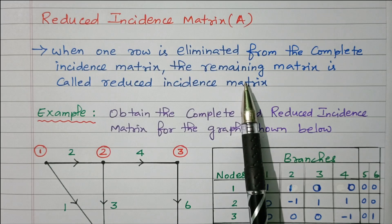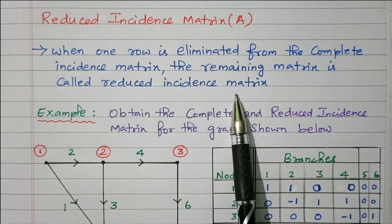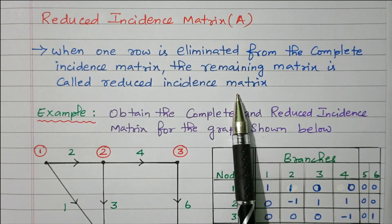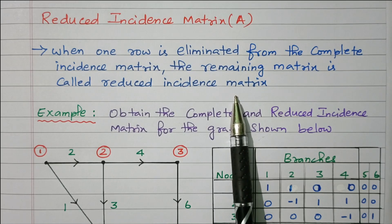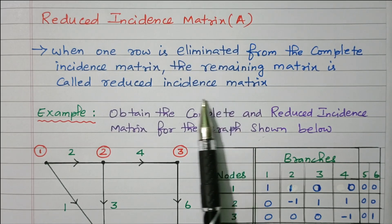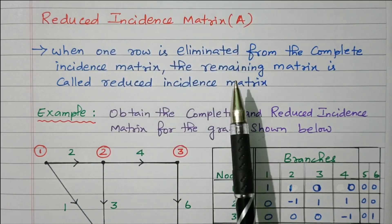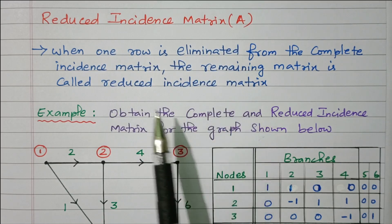A separate video is available for the complete incident matrix. The complete incident matrix gives information about the number of nodes, number of branches, how they are connected, and whether a branch is going away from a node or towards a node. The reduced incident matrix is represented by A. We will now see what the reduced incident matrix is.